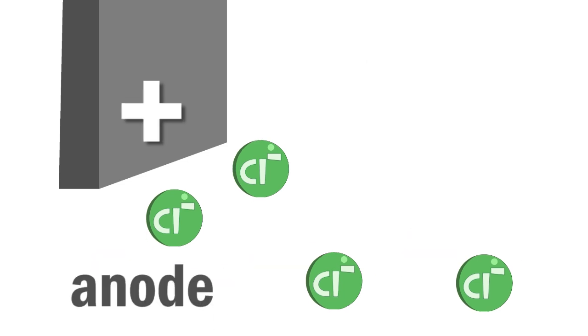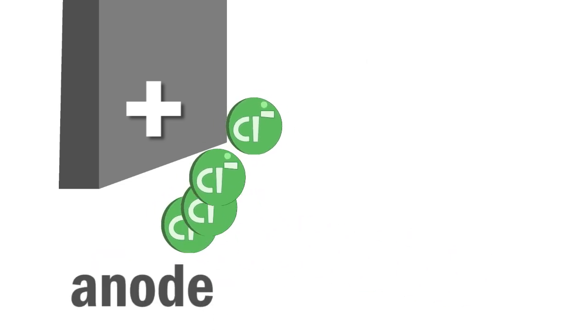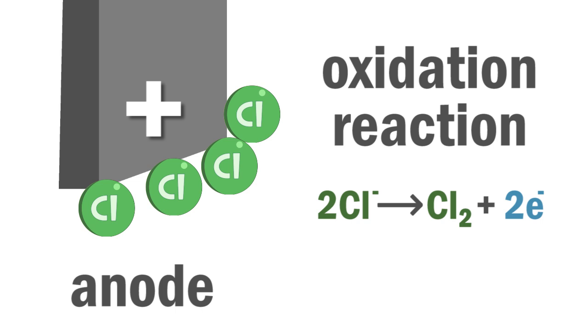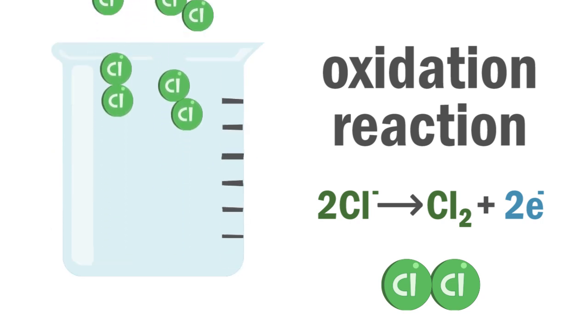At the anode or positive electrode, the chloride ions will each give up an electron and become a neutral chlorine atom. This is an oxidation reaction. The single chlorine atoms then pair up to form chlorine molecules and chlorine gas is produced.